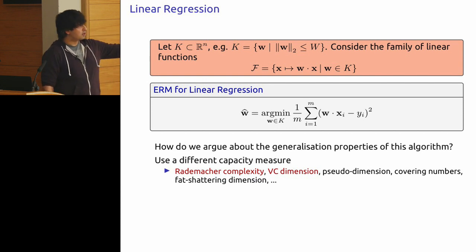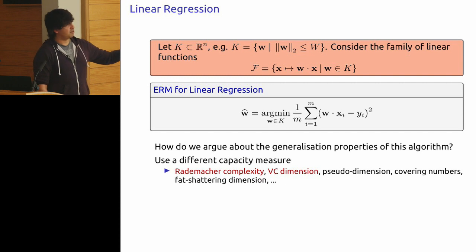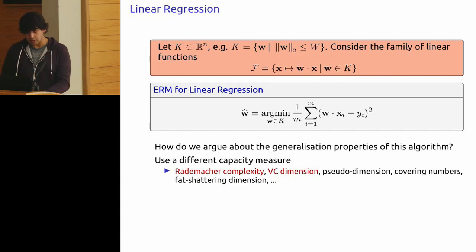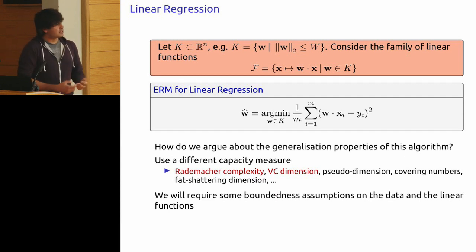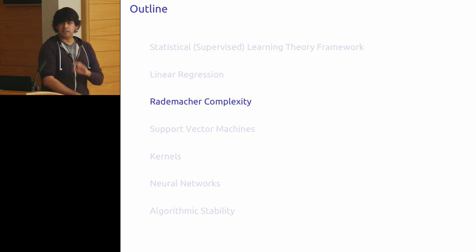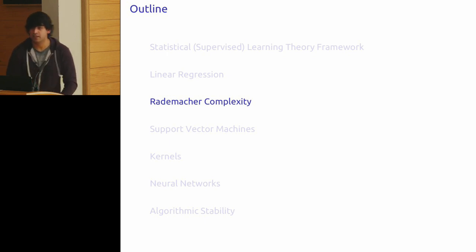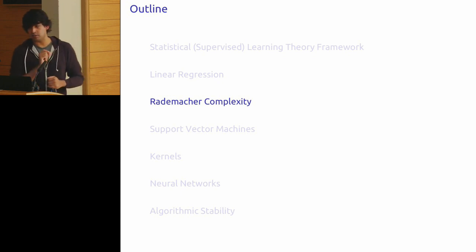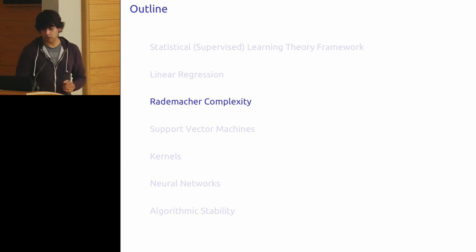We'll focus on Rademacher complexity, but I note there are several other capacity measures used — pseudodimension, fat-shattering dimension, and so on. For real-valued functions, we'll also require boundedness assumptions on both the data and the functions. VC dimension won't work here because our functions are no longer Boolean — we want a similar formula replacing VC dimension with something else, which is what Rademacher complexity provides.